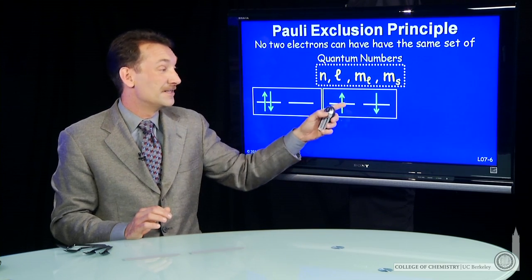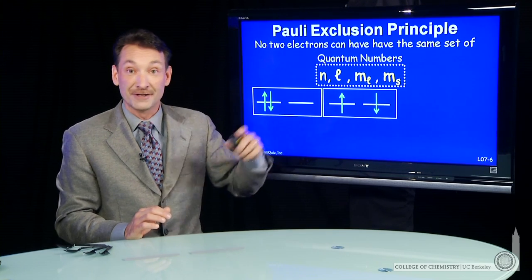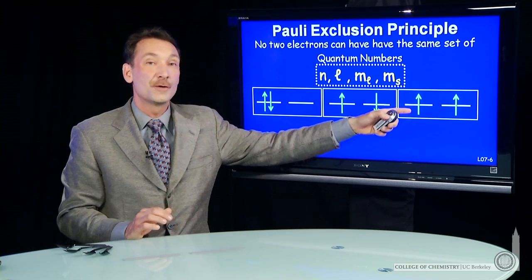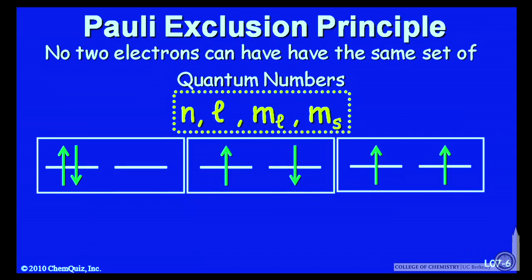They could have different m sub l values and different m sub s values. So they could go in spin anti-parallel. Or they could go in spin parallel. So the difference would be in the value of m sub l only. m sub s would be the same. They'd go in parallel.